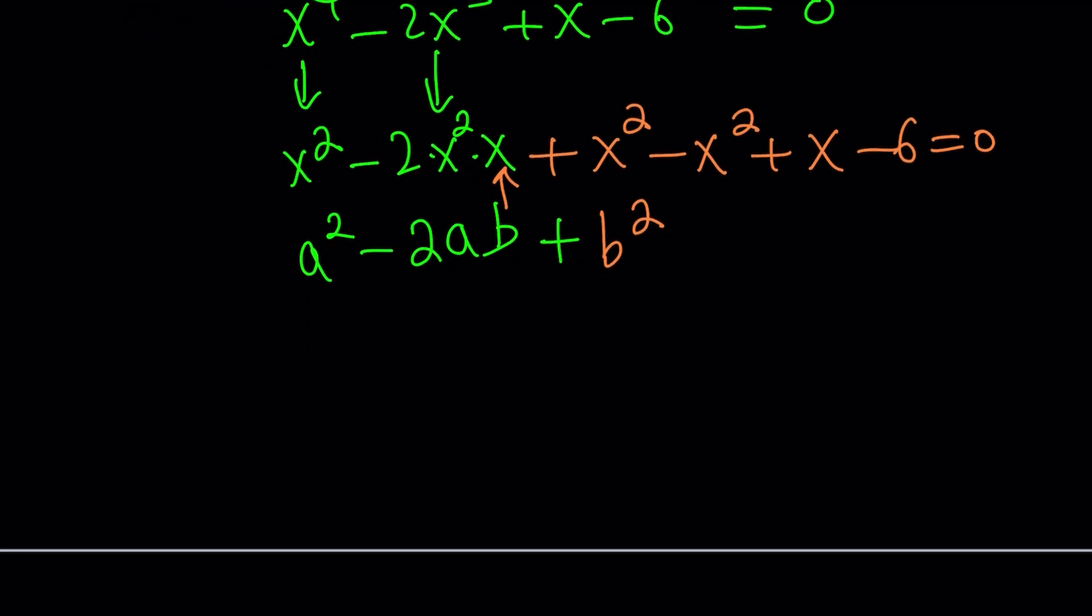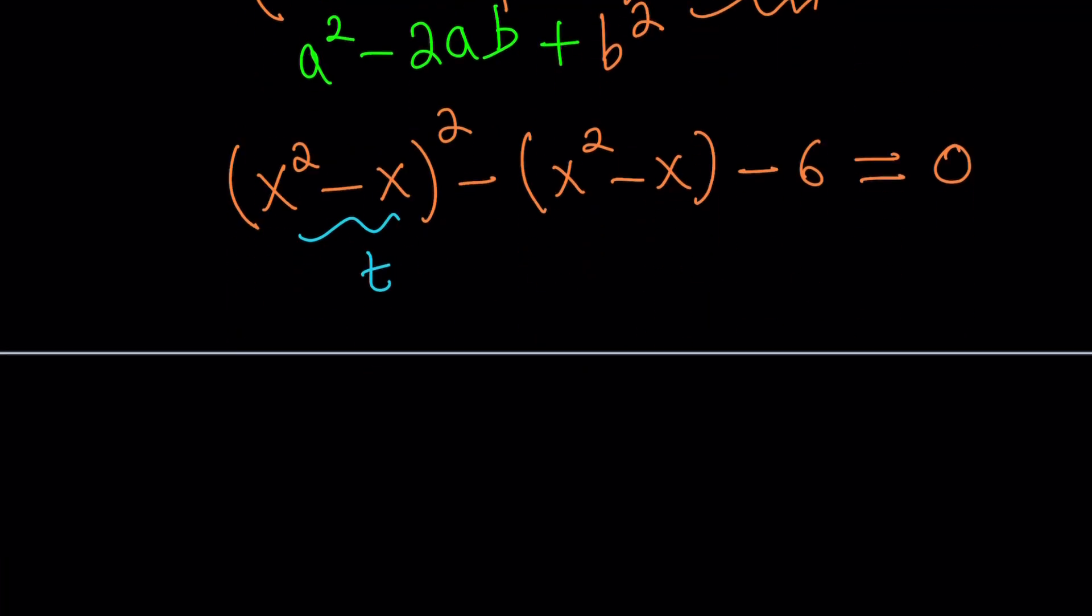Now we have the following. This is a perfect square. It is x squared minus x squared. And what about this? It is minus 1 times x squared minus x, and then minus 6 equals 0. Isn't this awesome? Take a look at it. This is calling for substitution. Let's do it. Call this t and go for t.